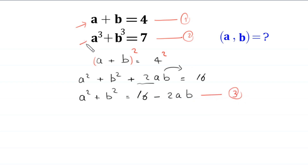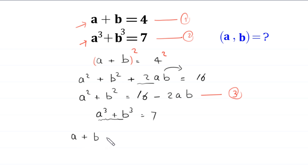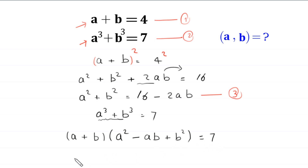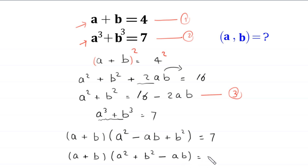Now, from equation 2, which is a cubed plus b cubed is equal to 7, this a cubed plus b cubed can be factorized as (a plus b) times (a squared minus ab plus b squared) is equal to 7. Rearranging, this becomes (a plus b) times (a squared plus b squared minus ab) is equal to 7.